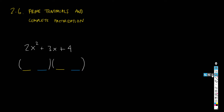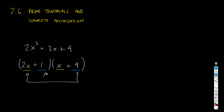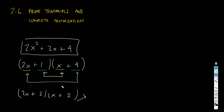If you try to factorize this trinomial using two binomials, for example, with 2x and x — their multiplication gives 2x squared — and then plus 1 and plus 4, whose product gives plus 4, the cross-products will not give 3x. Any other combination of signs and coefficients, such as 2x, x, plus 2 and plus 2, also won't work. Using only integers, we cannot factorize this trinomial.